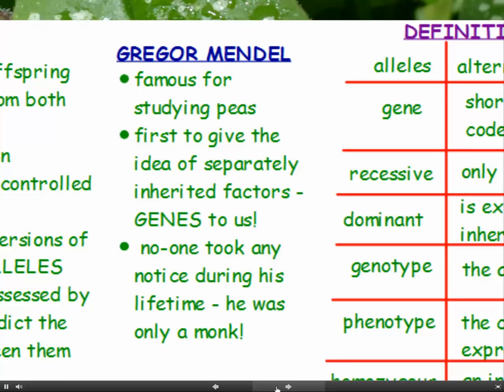The first person to start investigating the inheritance of different characteristics was an Austrian monk called Gregor Mendel, famous for studying peas. He was the first to give the idea of separately inherited factors that give us our characteristics — in other words, he was talking about genes. But in those days they didn't know about genes, and no one took any notice of him during his lifetime. He was only a monk, so they didn't give his ideas any credit whatsoever.